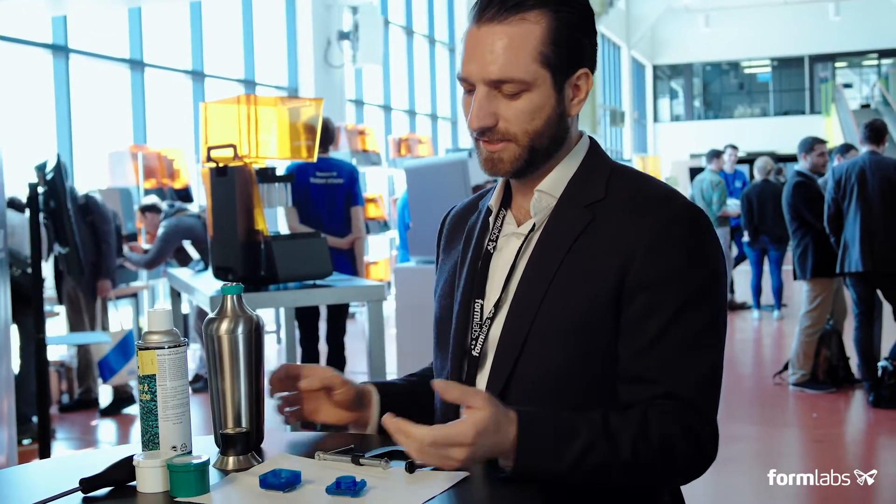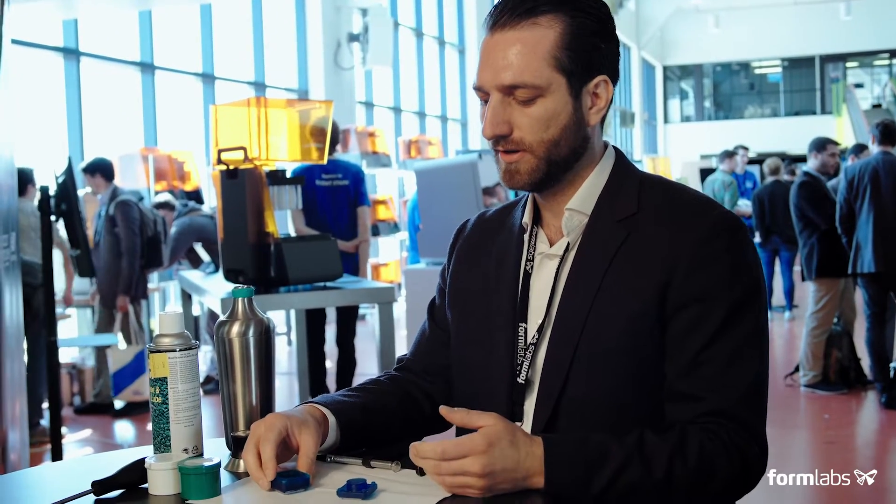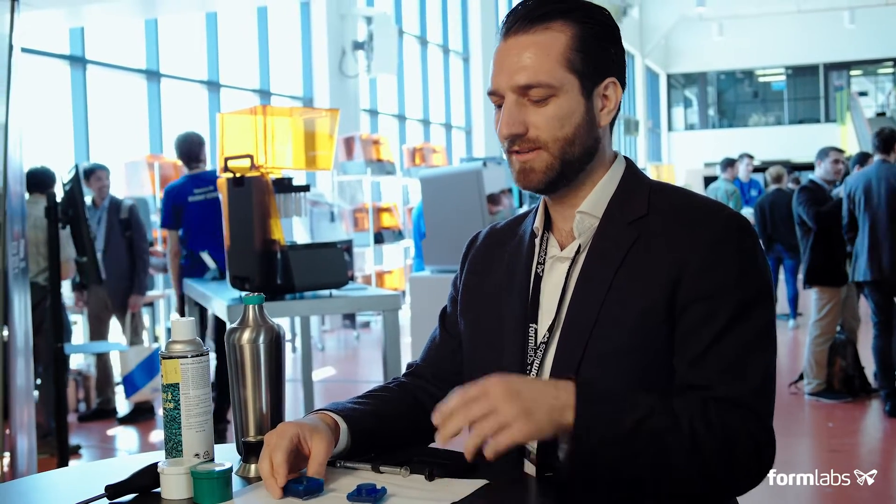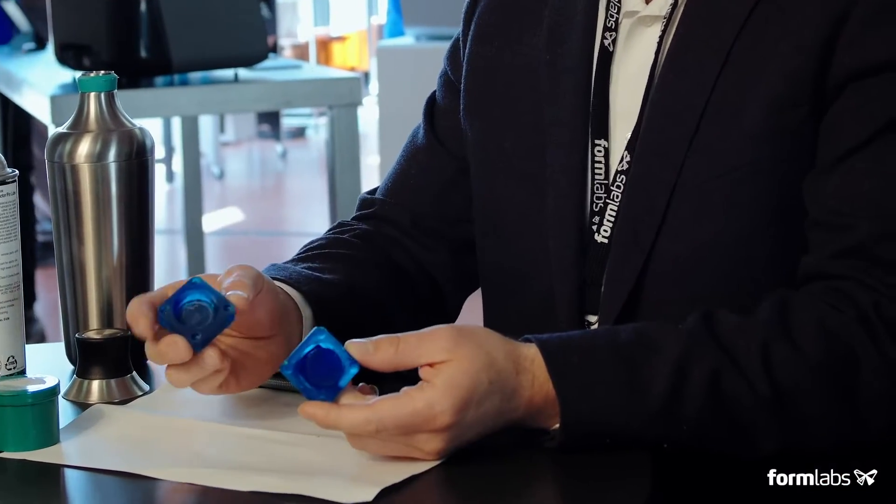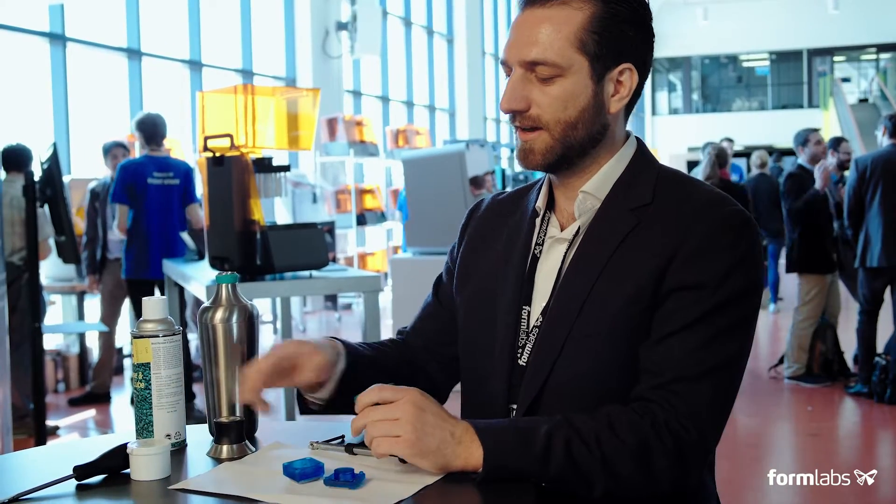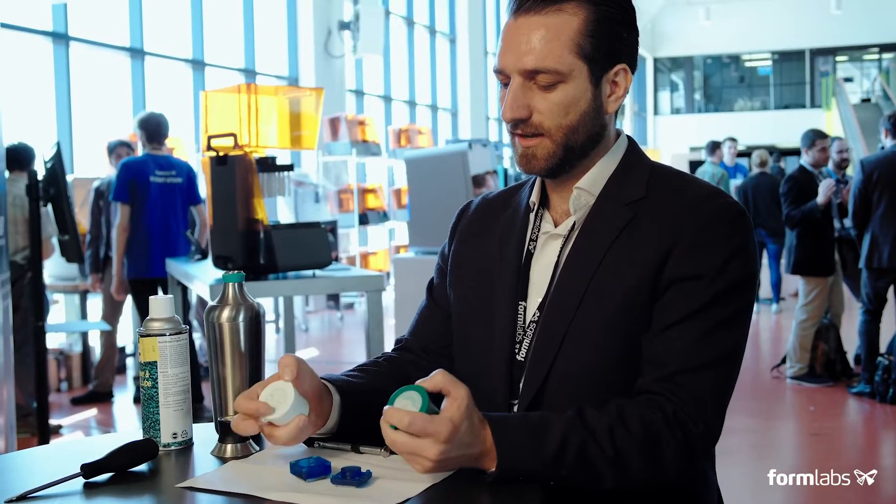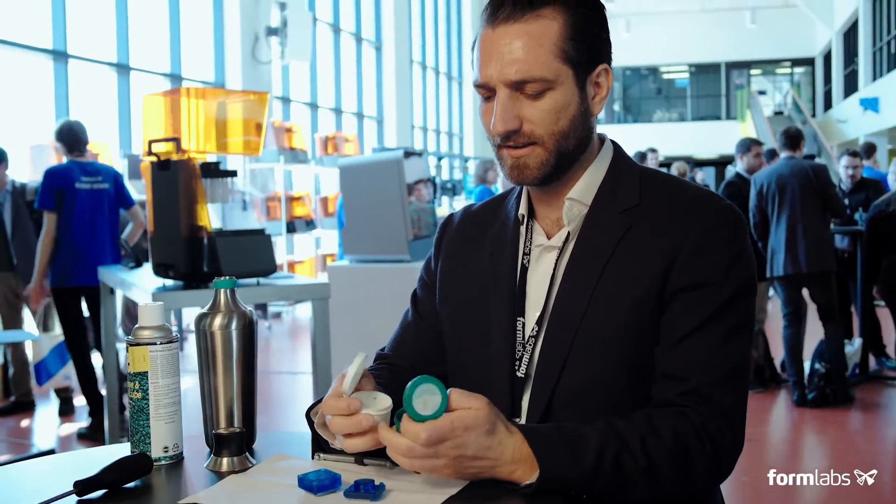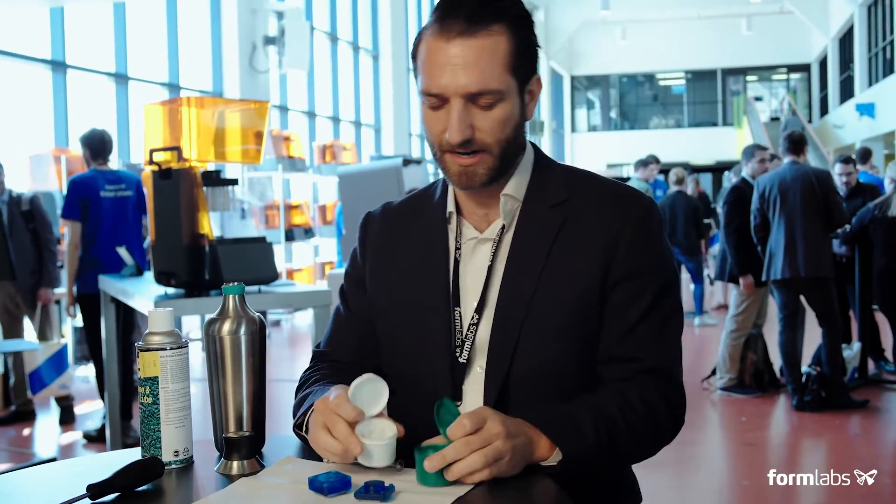So we developed this process to make real silicone parts very quickly. We 3D print molds on the Form 2 3D printer and we cast silicone inside the mold and the type of silicone we use we think is kind of the cool part.